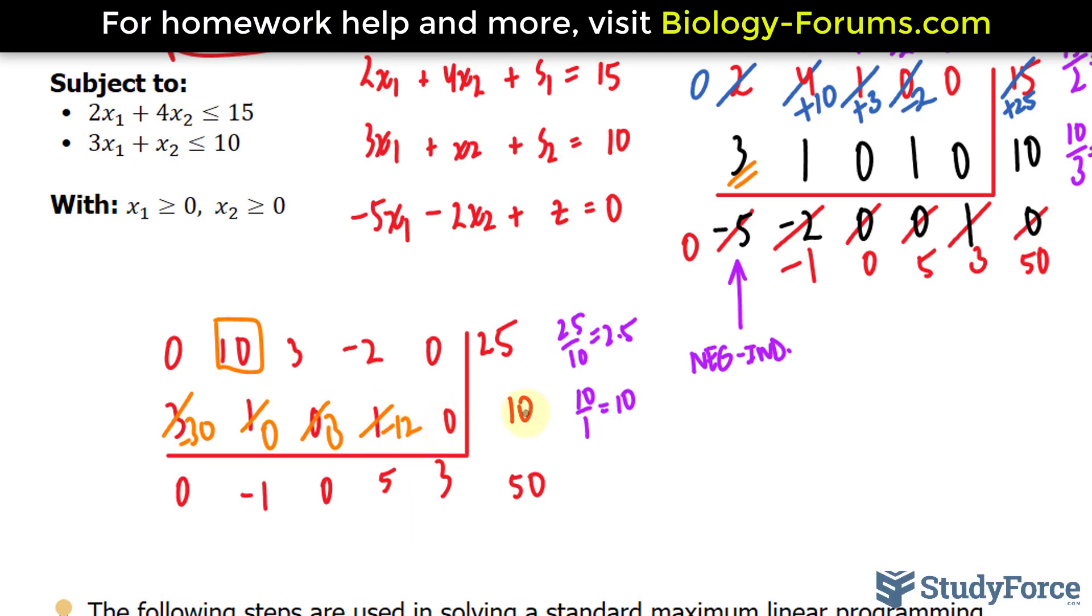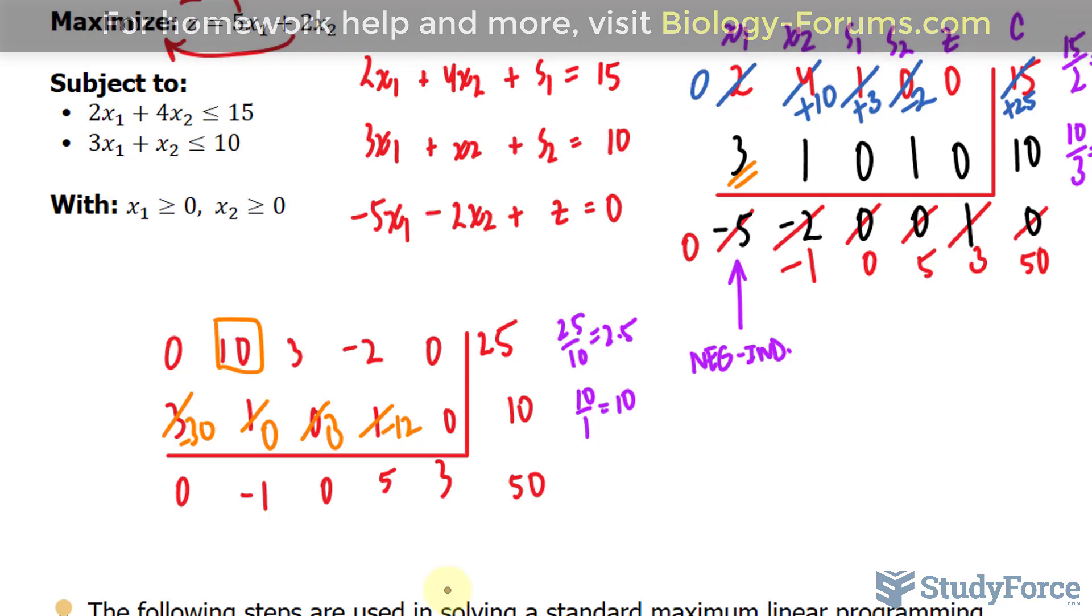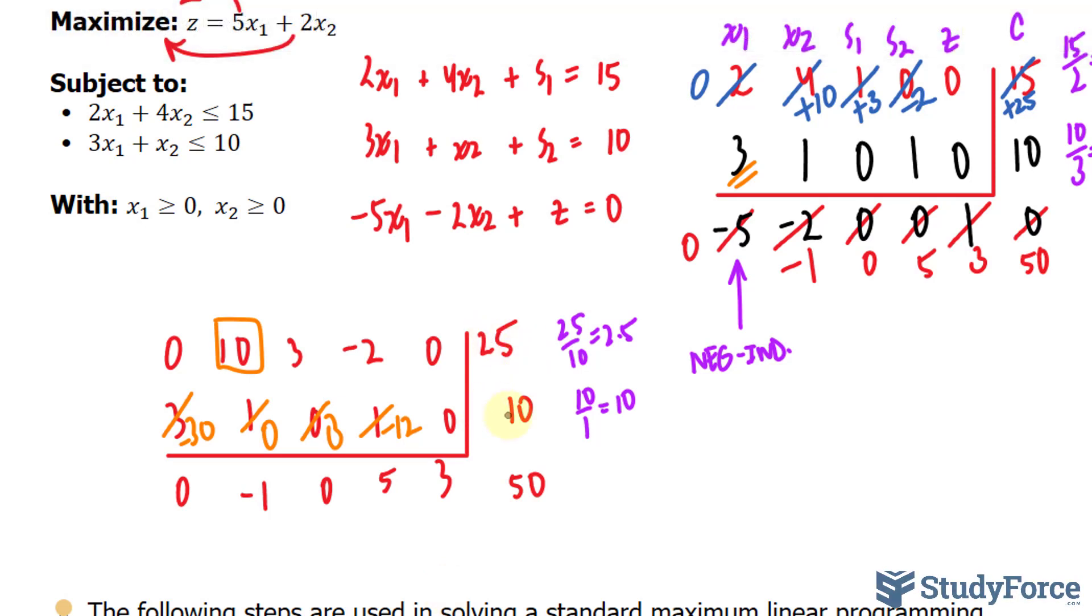I'm going to multiply this whole row by negative 1 to make things positive. So, now we have positive 30, negative 3, positive 12, and positive 75.